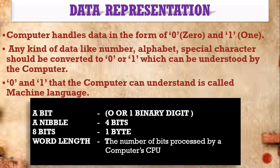The word length can be 8-bit, 32-bit, or 64-bit. So if it is a 64-bit computer, 64 bits can be processed at a time. It can process twice as fast compared to a 32-bit processor. So the speed of the computer can be determined by the word length.